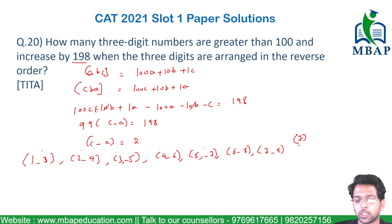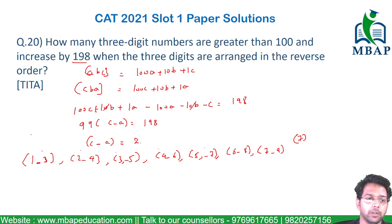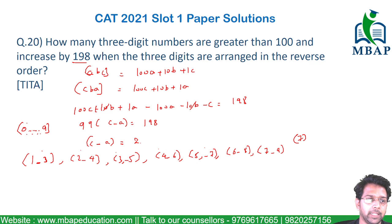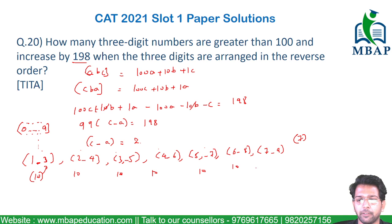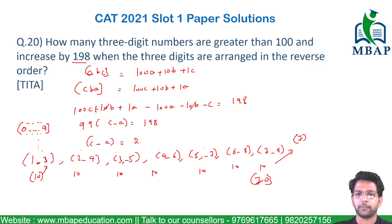For every such combination, the middle digit B can be any number from 0 to 9, giving 10 possibilities. So for each of the 7 combinations, there are 10 valid numbers. The total is 10 × 7 = 70. On reversing, the difference of these 70 numbers will be 198, so the answer is 70.